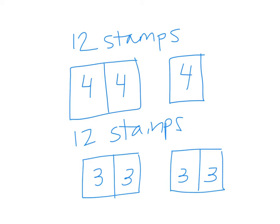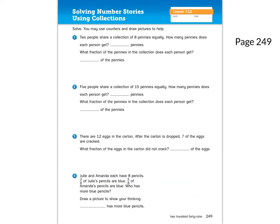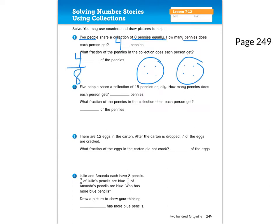Let's open our math journals to page 249. Let's underline key information in the first one: two people share a collection of eight pennies equally — how many pennies does each person get? This is similar to our warm-ups. Two people sharing eight pennies equally would each get four pennies. What fraction does each person get? They'd get four out of eight. Can you think of an equivalent fraction? If you were thinking one-half, you are correct.